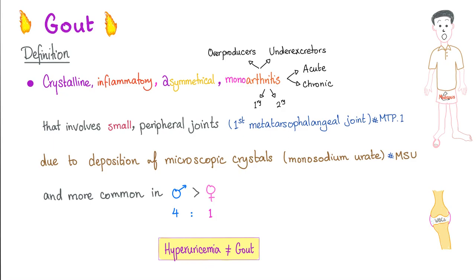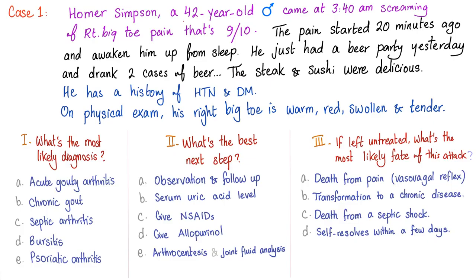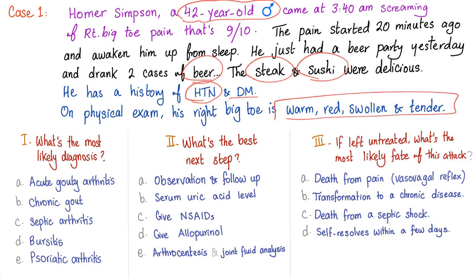Hyperuricemia is not the same thing as gout. Gout is more common in middle-aged men, associated with meat, seafood, and beer. Uncontrolled hypertension and diabetes are risk factors.